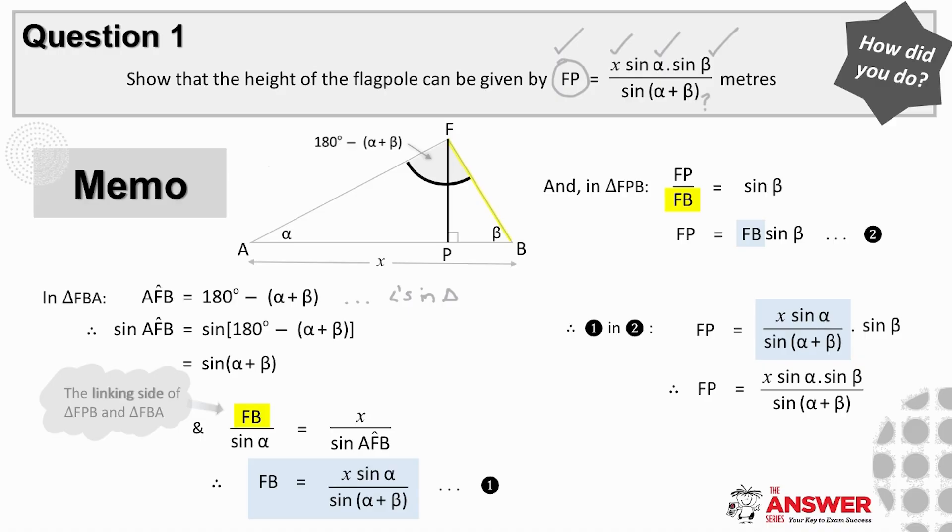Let's make an equation for it first. First, we use the sine rule in the non-90 degree triangle. So, FB over sine alpha equals X over sine AFB. We can replace sine of AFB with sine of alpha plus beta because of having shown this working here. And so, if we then make FB the subject, we get X times sine alpha over sine alpha plus beta.